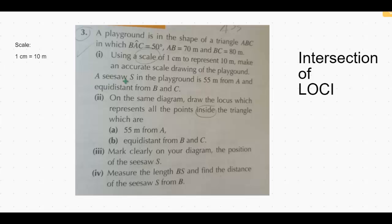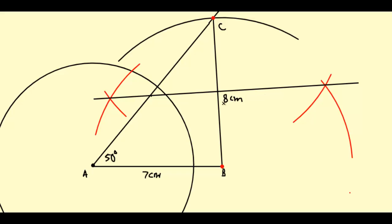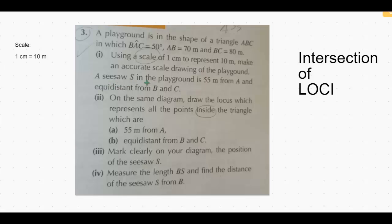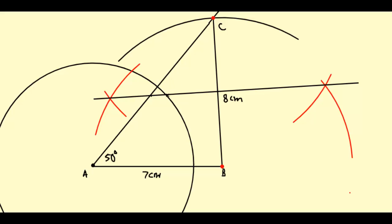Please read this question again. The seesaw S is in the playground — it is 55 meters from A and equidistant from B and C. The seesaw is on the perpendicular bisector and also on the circle locus. These two loci intersect inside the triangle and can also intersect outside, but since the seesaw is in the playground, it must be inside the triangle. So the seesaw is at the point where the circle and the perpendicular bisector intersect, which is 5.5 centimeters from A and equidistant from C and B.